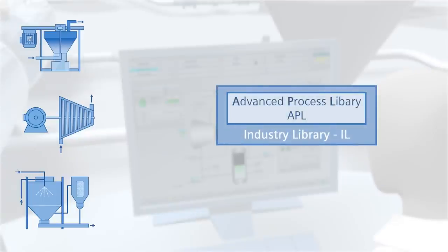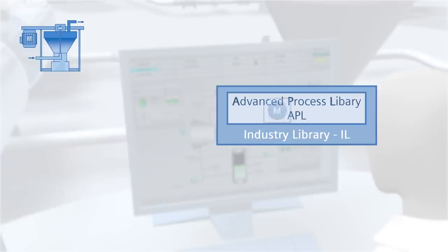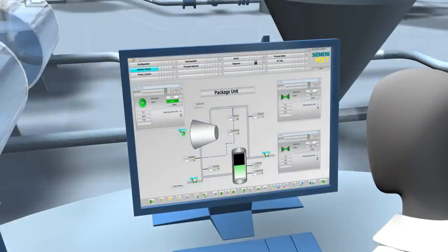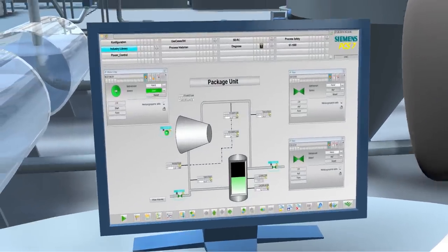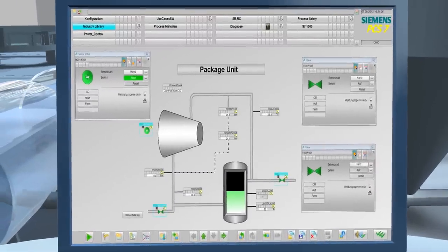The Advanced Process Library, or APL for short - the Industry Library is tailor-made for the requirements of the process industry. With its help, you integrate your package units homogeneously and conveniently into SIMATIC PCS 7. The Industry Library offers you a comprehensive range of all the relevant technological blocks.